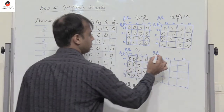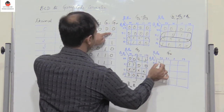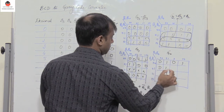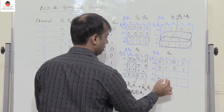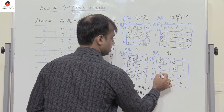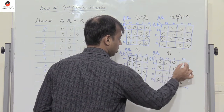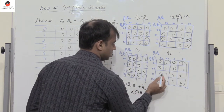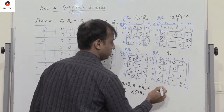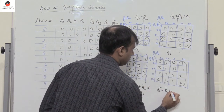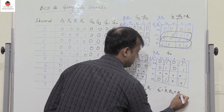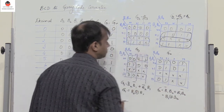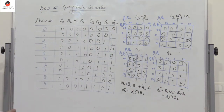To find G0, the K-map values are 0 1 1 0, then 0 1 1 0 again, then 0 1, with the remaining as don't cares. Combining groups of 4: B3 and B2 are in complementary form, so we get B1 bar·B0 + B1·B0 bar, which is nothing but B1 XOR B0. So G0 = B1 XOR B0.